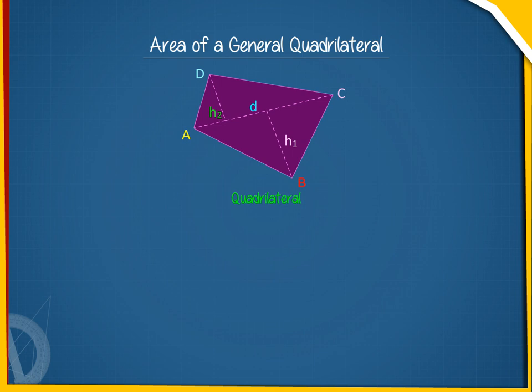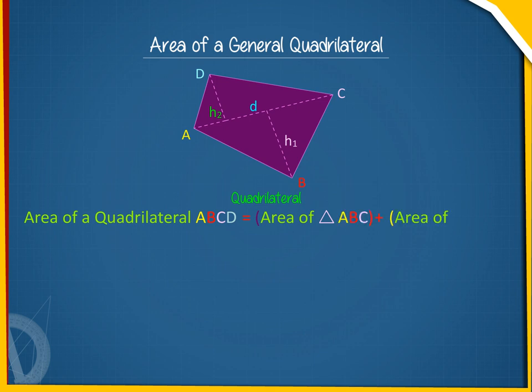Observe the given figure. Area of quadrilateral ABCD equals the area of triangle ABC plus the area of triangle ADC, which equals 1/2 AC times H1.